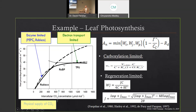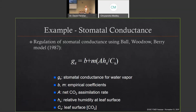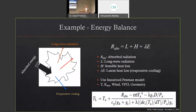This is integrated with a stomatal conductance model — the Ball-Berry model. Stomatal conductance is linearly related to net photosynthetic rate, humidity, and CO2 concentration. Now we have two equations and multiple unknowns that must be solved simultaneously. We then integrate this inside an energy balance at the leaf surface — a linearized form of the Penman model. Once we solve for photosynthesis and stomatal conductance, we can estimate transpiration rate.